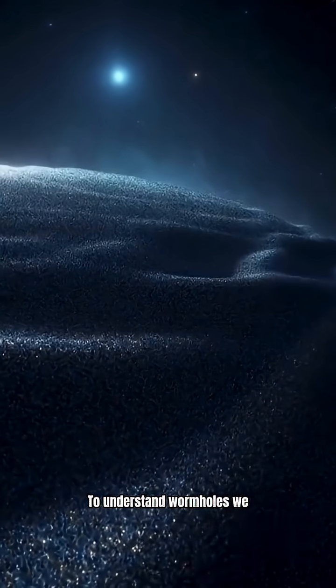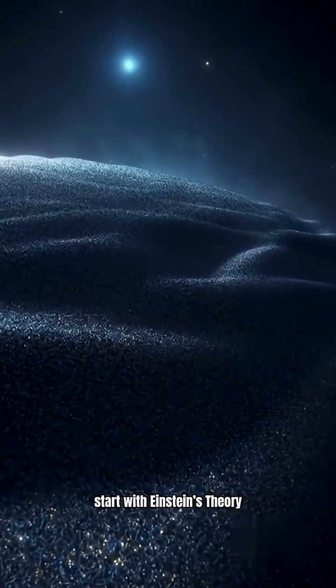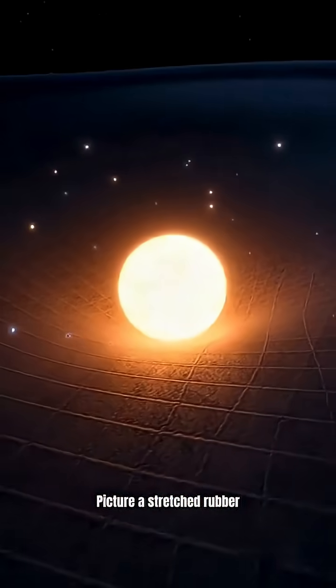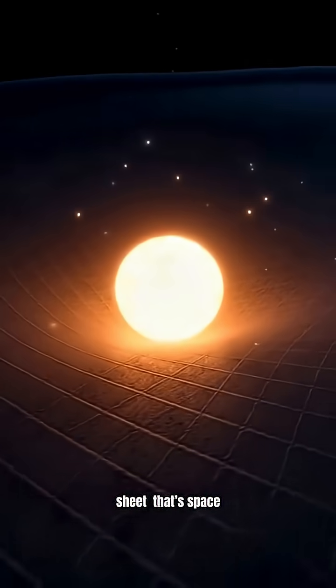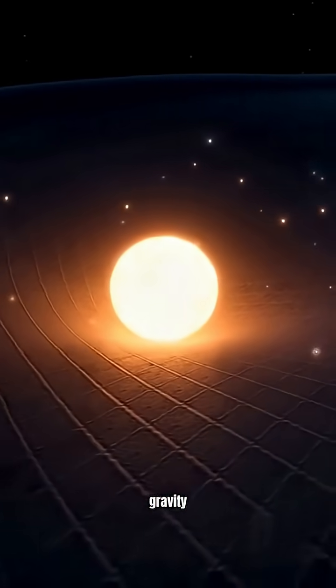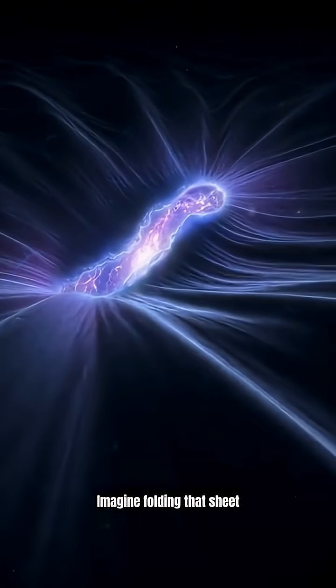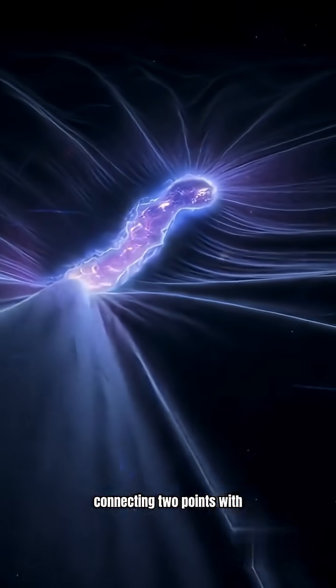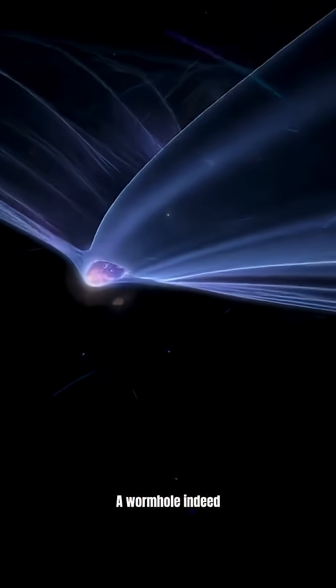To understand wormholes, we start with Einstein's theory of relativity and gravity. Picture a stretched rubber sheet - that's space. Place a bowling ball - that's gravity. Imagine folding that sheet, connecting two points with a tunnel. A wormhole indeed.